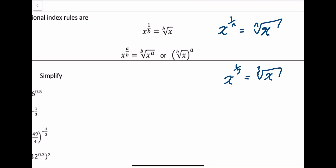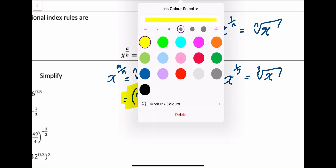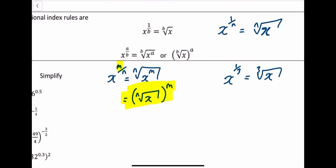The other rule: x to the power of m over n means you raise x to the power of m and then take the nth root, or you take the nth root of x and then raise it to the power of m. More often than not, taking the nth root first is the easier approach because it makes the number smaller before raising to the power of m. So the numerator is the power you raise to, and the denominator is the root you take.